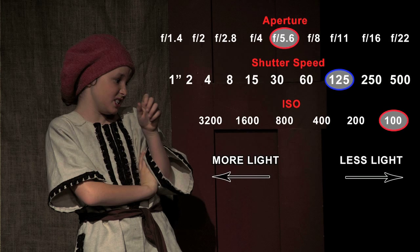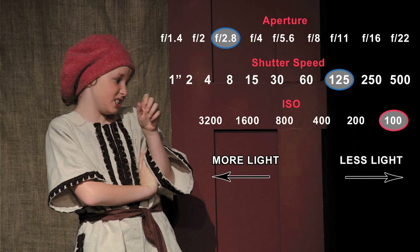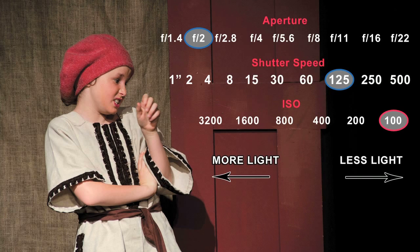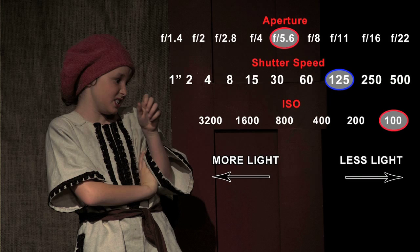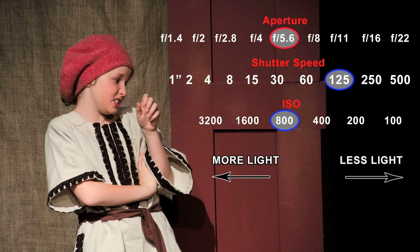If I had used a better, faster lens — lenses that open the aperture wider are called faster lenses because they allow faster shutter speeds — I could have moved aperture three stops wider. But this lens didn't allow me to open aperture beyond f5.6. That's why higher ISO came in handy. Since I changed shutter speed three stops from the meter reading, I had to change ISO three stops as well — one, two, three — ending up at ISO 800.